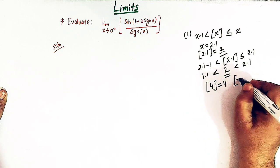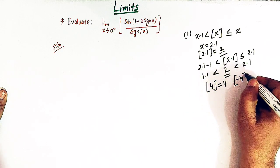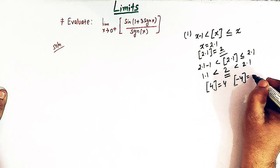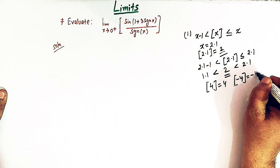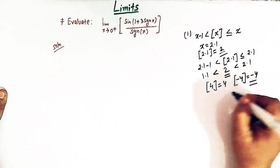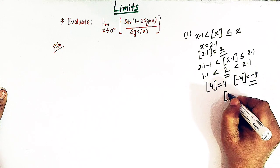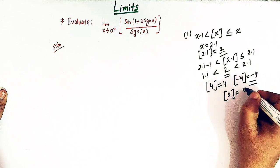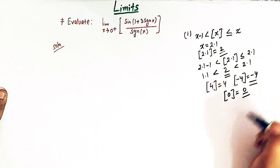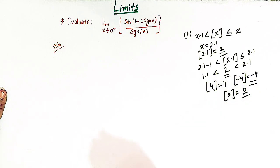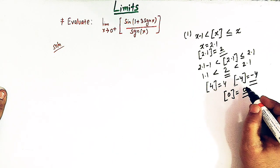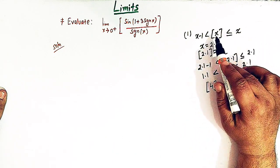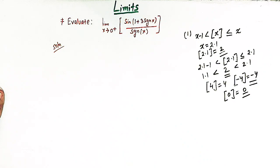Similarly, the greatest integer of -4 is again -4, and the greatest integer of 0 is 0. So this is a brief description of the definition of the greatest integer function.